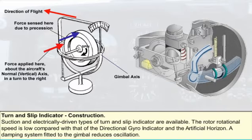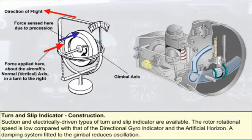Suction and electrically driven types of turn and slip indicator are available. With the former, an engine-driven pump or venturi tube is used to apply suction to the instrument case. Replacement air enters via a filter and is directed by a jet at buckets cut in the periphery of the rotor. The rotor rotational speed is low compared with that of the directional gyro indicator and the artificial horizon, because the gyroscopic property of precession is used to measure rate of turn, and so a high gyroscopic rigidity is undesirable.